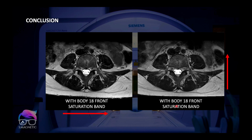If you want to stay with the AP direction, use it with the saturation band because of the respiratory artifacts, and remember to turn on the front coil elements to get more homogeneous signal intensity throughout the image.